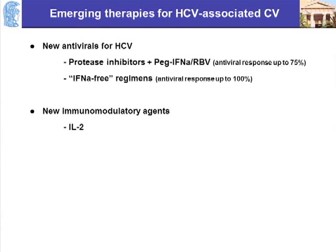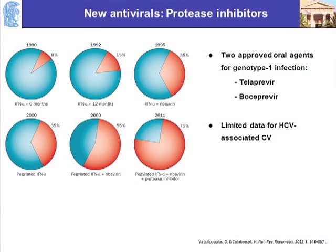New things coming are the new antivirals for Hepatitis C and a small study showing interleukin-2 may be helpful. New protease inhibitors — telaprevir and boceprevir — have been approved in the U.S. and Europe. These are the two newly approved oral antiviral agents for genotype 1 infection, increasing the rate of viral clearance up to 75%. Interferon-alpha-free regimens are also coming that promise responses up to 100%. There are not yet enough data specifically for Hepatitis C-associated cryoglobulinemic vasculitis.